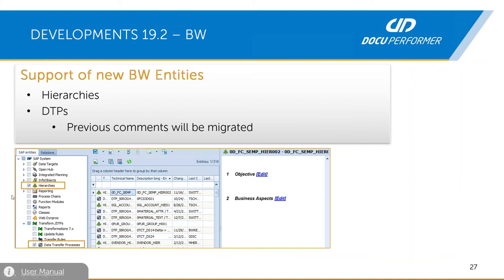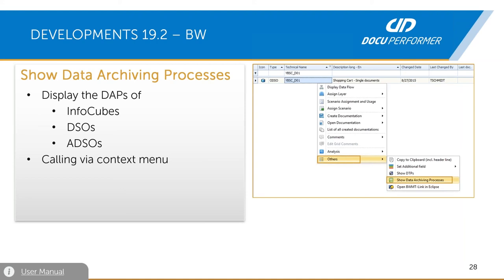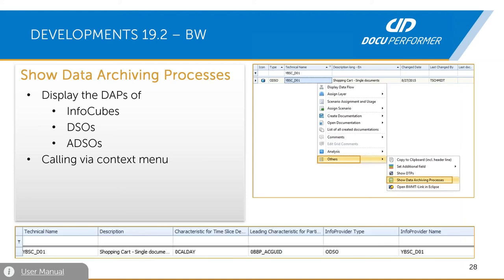In the entity tree you can see the new entity types, and in the entity grid you see the objects which you can comment. The next point is data archiving processes. The new version makes it possible to display the DAPs of DSOs, ADSOs, and InfoCubes. They can be called from the context menu of the respective InfoProvider, and they can also be commented and included in documentation. You open the context menu of a DSO, go to 'Others', then 'Show data archiving processes', and a list is generated where you can right-click on a DAP and click 'Show comment' to add a comment.